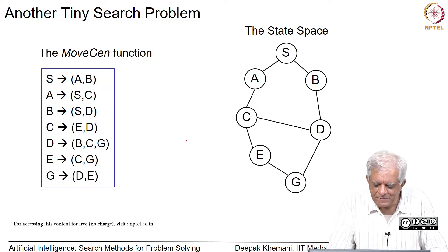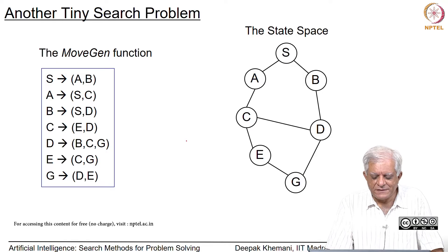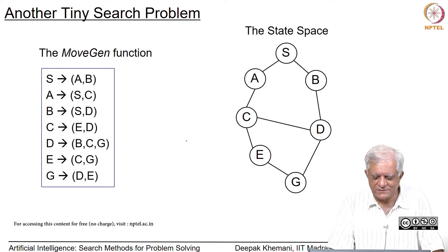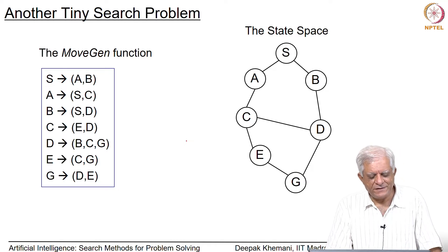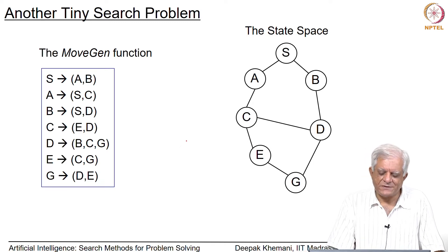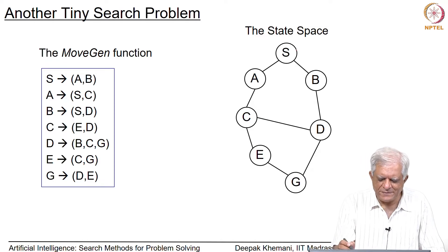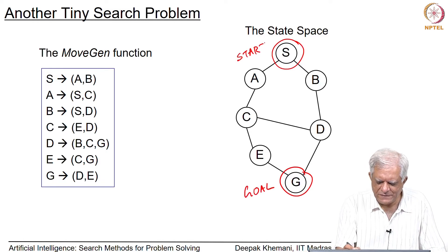Let us look at a small example to illustrate an important point. This point was raised when I was teaching this course at IIT Dharwar, and a student called Siddharth Sager pointed out to me that if you are maintaining the closed list, then DFID will not find the shortest path. Let us see what is happening. This is a small search space, and as before we will say this is the start node and this is the goal node, and we will quickly see how the algorithm behaves.